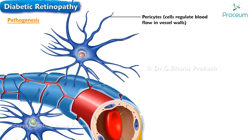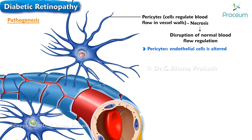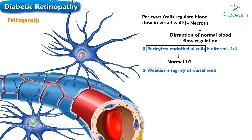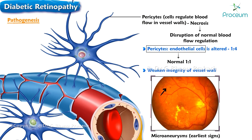As the disease progresses, the pericytes — cells that regulate blood flow in the vessel walls — undergo necrosis, resulting in the disruption of normal blood flow regulation. Additionally, the balance between pericytes and endothelial cells is altered, with a shift from the normal 1-to-1 ratio to 1-to-4. These changes gradually weaken the integrity of the vessel walls, leading to the formation of microaneurysms, which are one of the earliest signs of diabetic retinopathy.